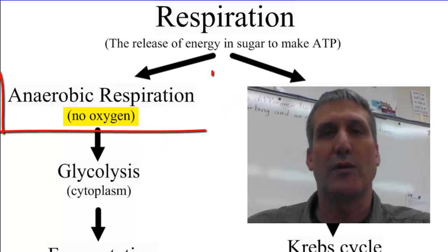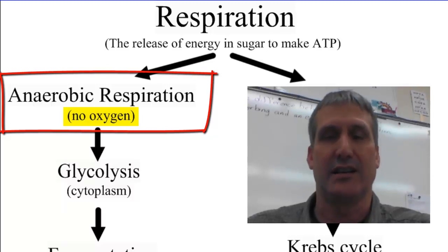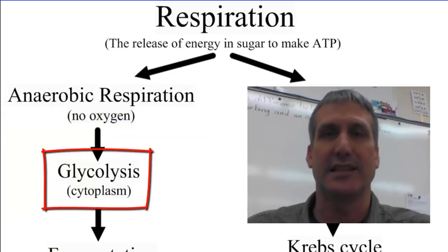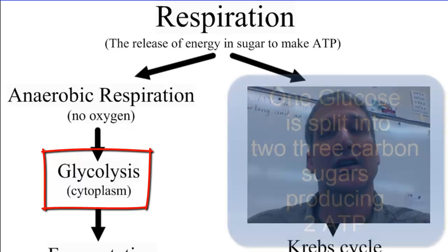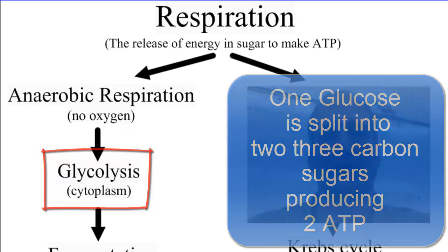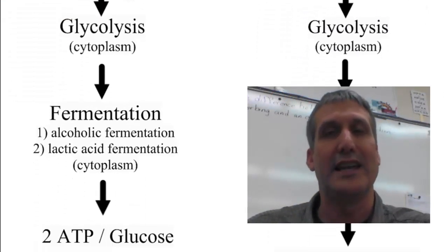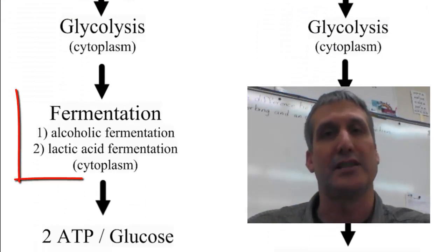Let's start with anaerobic respiration first. Anaerobic respiration does not require oxygen. The first stage of anaerobic respiration is glycolysis, which takes place in the cytoplasm. In this stage, one glucose molecule is split into two 3-carbon sugars and two ATP are produced. In order for this process to continue, the next step is fermentation.